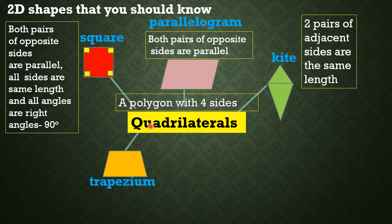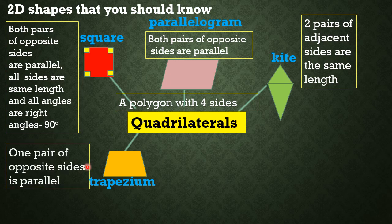Trapezium. A trapezium is also a quadrilateral. It has one pair of opposite sides that is parallel. This is the opposite side and they are parallel.